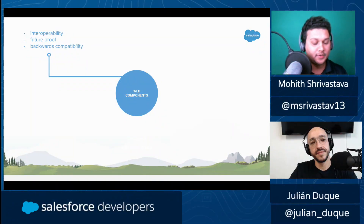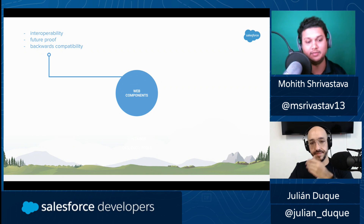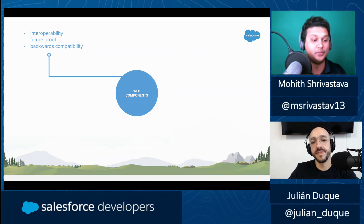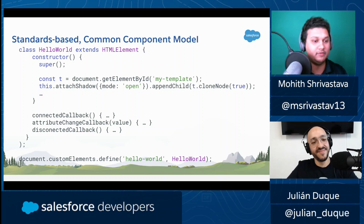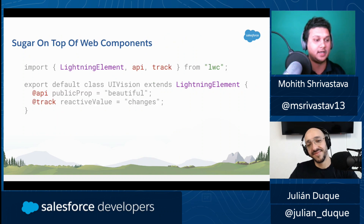Lightning Web Components is built on top of Web Components, which is a W3C standard. The reason we chose to build on Web Components is because it's modern, interoperable, future-proof, and backward compatible. The Web Components standard itself is moving in a very good direction. However, with pure Web Components you end up repeating a lot of code, so there's a need for a framework or compiler to give us something — a sugar on top of Web Components. That's the idea behind Lightning Web Components.